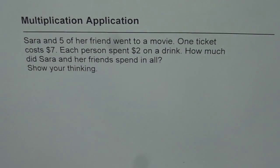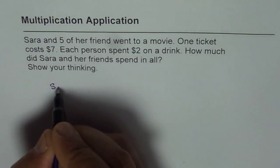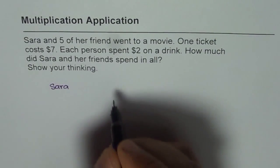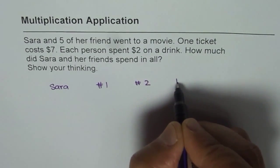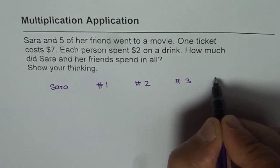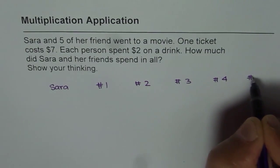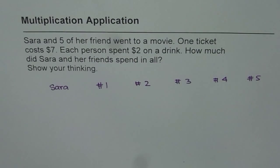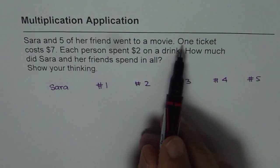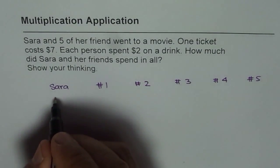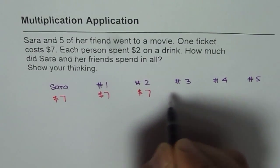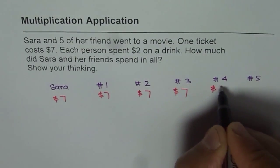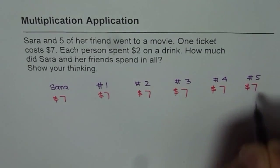Show your thinking. So what we have here is that Sarah and five friends went for a movie. Now one ticket costs $7.00 for each person — so that is $7.00, $7.00, $7.00, $7.00, $7.00, and $7.00 for all six people.